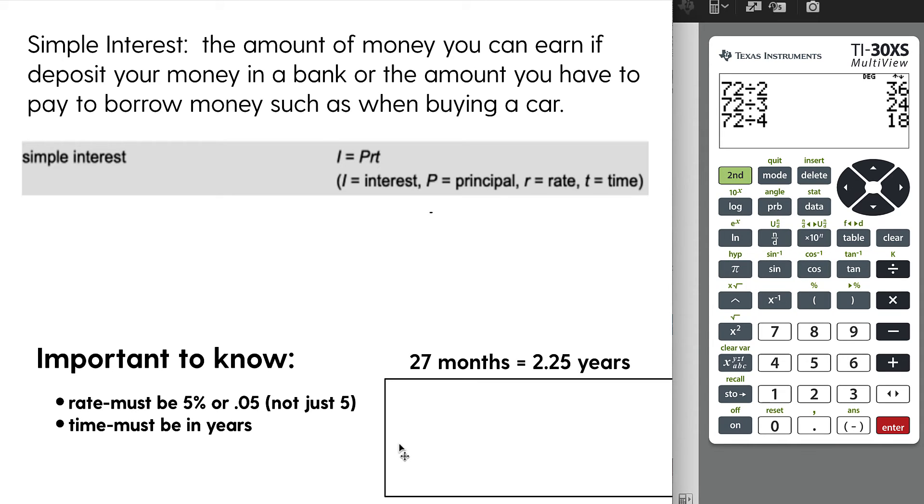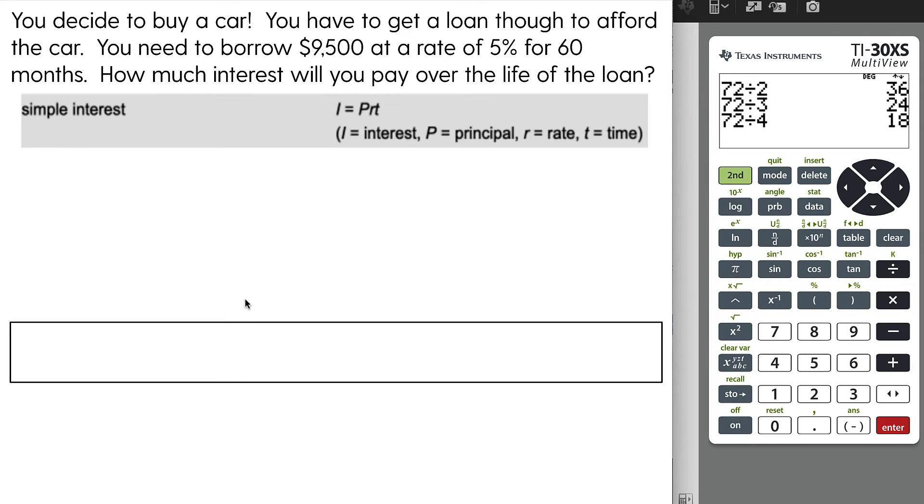So how do you do that? What if they give you 27 months? Well, that's going to be 2.25 years. How do you figure that out? You take 27 divided by 12 to get 2.25. So all the examples I'll do in this video will include months that you are going to have to convert. Let's do an example.